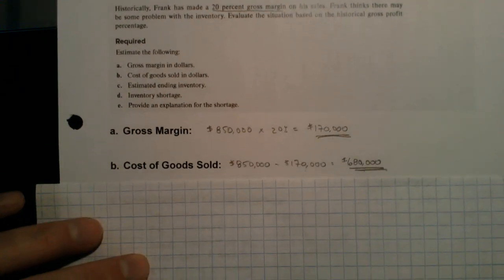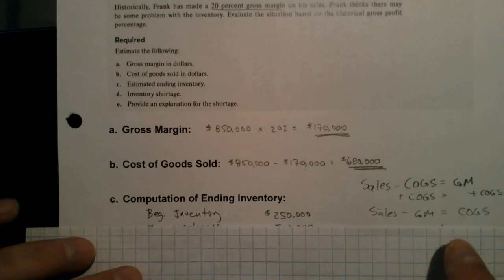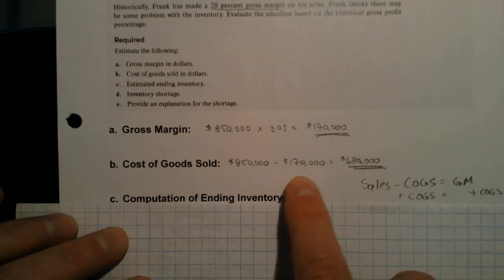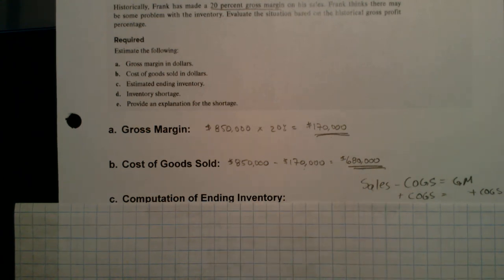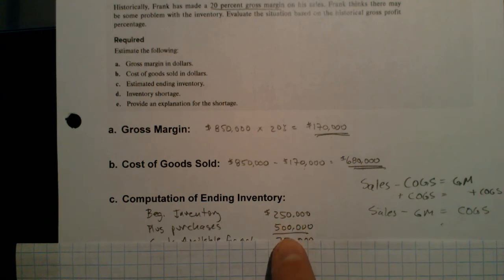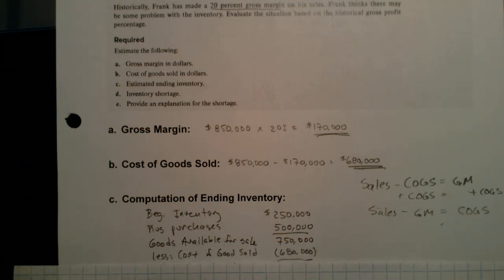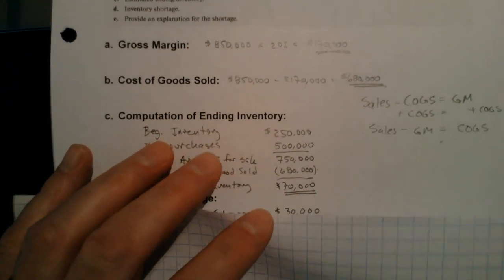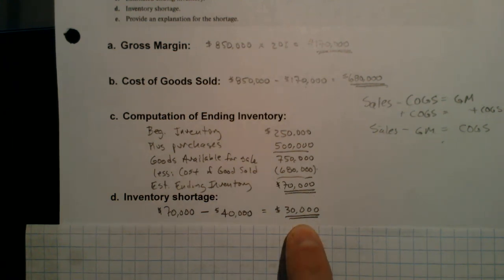Next they ask for cost of goods sold. Sales minus cost of goods sold equals gross margin, so cost of goods sold equals sales minus gross margin: $850,000 minus $170,000 means cost of goods sold was $680,000. For ending inventory: beginning inventory $250,000 plus purchases $500,000 equals $750,000 goods available for sale. If $680,000 left with customers, I should have had $70,000 on the shelf. But I only counted $40,000, so my inventory shortage is $30,000.